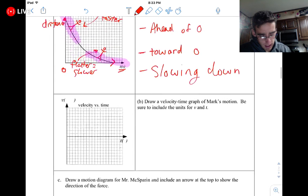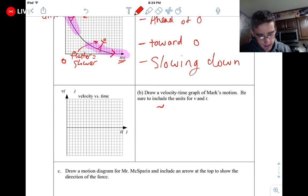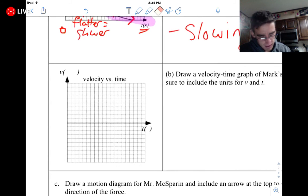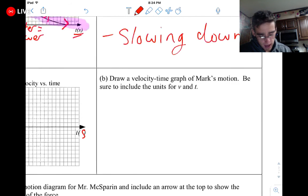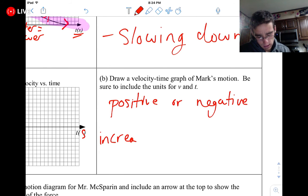Now, velocity versus time graph. This part, guys, is going to be a lot easier. So first thing, now, this wants me to put units in, so I'm just going to write in meters per second and seconds per units. Now, it wants me to draw this graph. Now, there's two things I need to look at. I need to know, is it positive or negative? And then I also need to know increasing or decreasing.